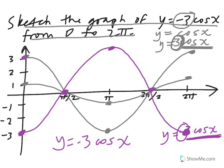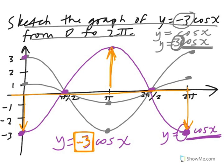Now I want to clear up a common misconception. If anyone ever asks you what the amplitude of this function is, you might just look at this number and say the amplitude is whatever this number is. But be careful — an amplitude is never negative. An amplitude is always positive. An amplitude just means how far above and how far below the x-axis the curve reaches. For this curve, negative 3 cosine of x, it goes a maximum of 3 units above the baseline, which is the x-axis, and reaches a minimum of 3 units below. That's why we call the amplitude 3. The amplitude is not negative 3.